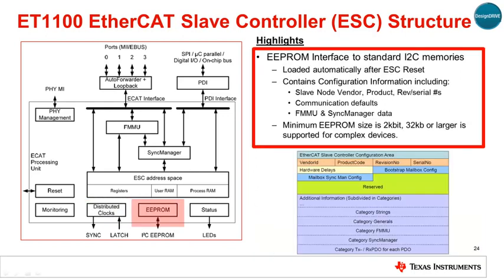The final block is the EEPROM interface to external EEPROMs over I2C. The information in the external EEPROM is loaded after exiting reset and includes various configuration data, including the slave node vendor, product, revision, and serial numbers, communication default values, and FMMU and sync manager data. The information stored up to Word 63, or hex address 3F, is mandatory for slave node operation.